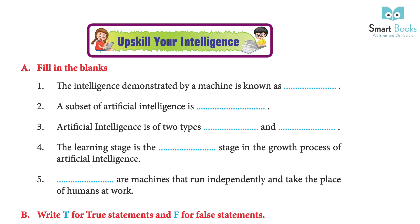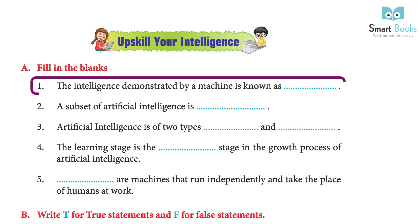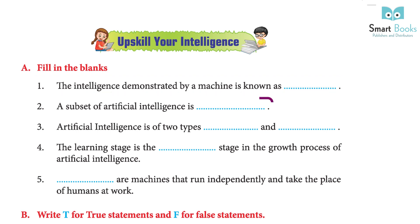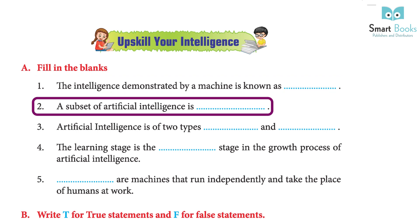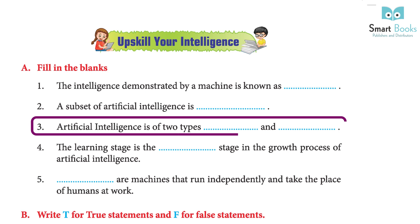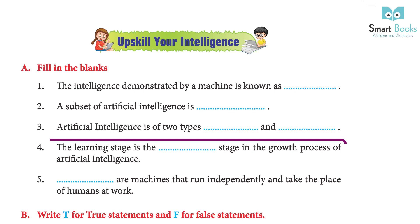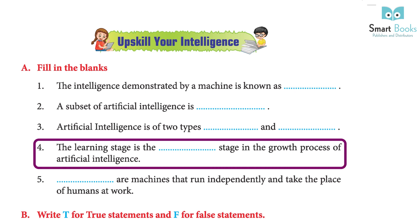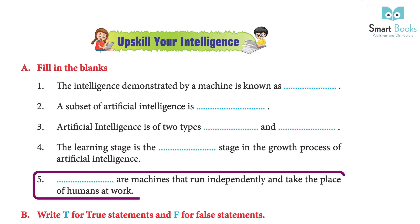Upskill Your Intelligence — Fill in the blanks: 1. The intelligence demonstrated by a machine is known as — Answer: AI. 2. A subset of artificial intelligence is — Answer: Machine learning. 3. Artificial intelligence is of two types — Answer: Weak AI and Strong AI. 4. The learning stage is the — stage in the growth process of artificial intelligence — Answer: First. 5. Dash are machines that run independently and take the place of humans at work — Answer: Robots.